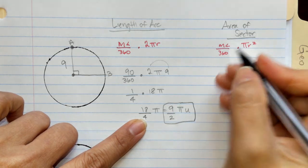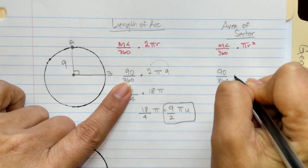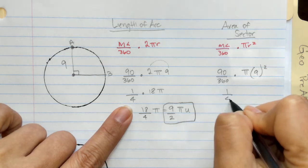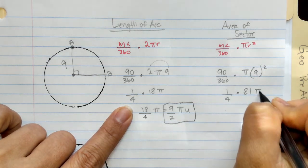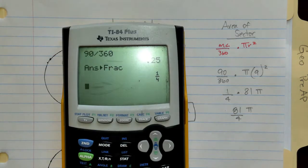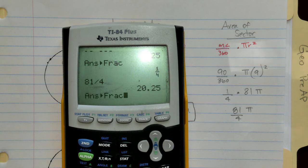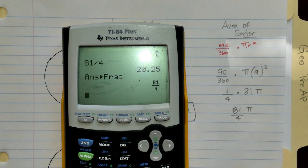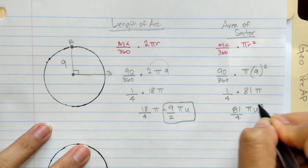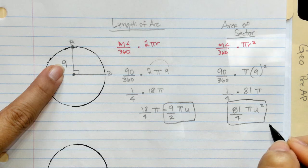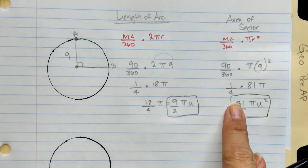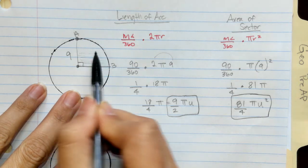Now for area of sector: 90 over 360 times π times 9 squared. This reduces to one-fourth times 81π. 1 times 81 over 4 is 81π/4 units squared. Remember: length of arc is on the outside, and area of sector is the inside piece.